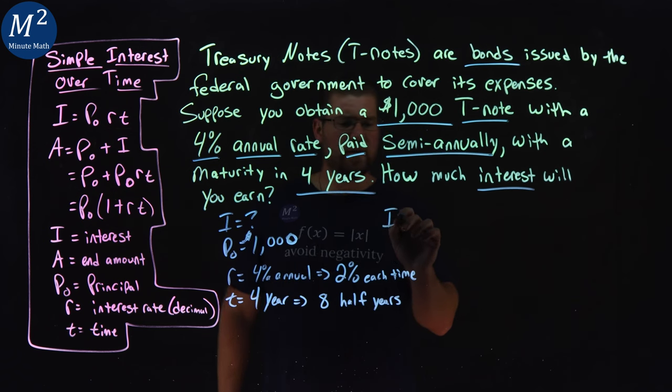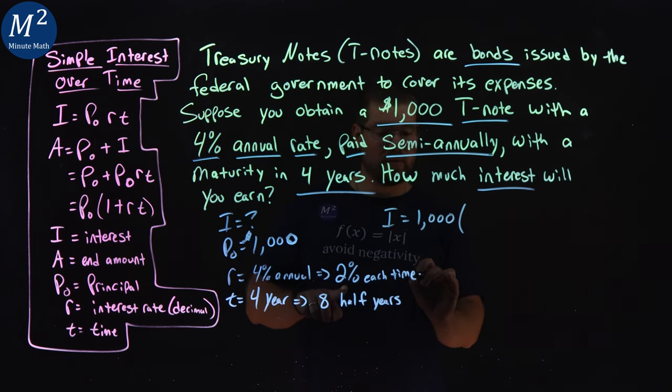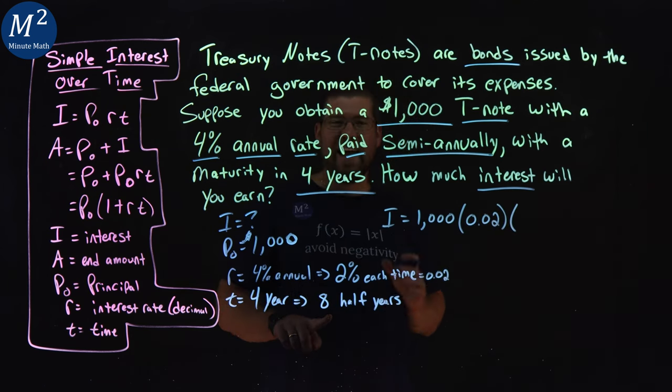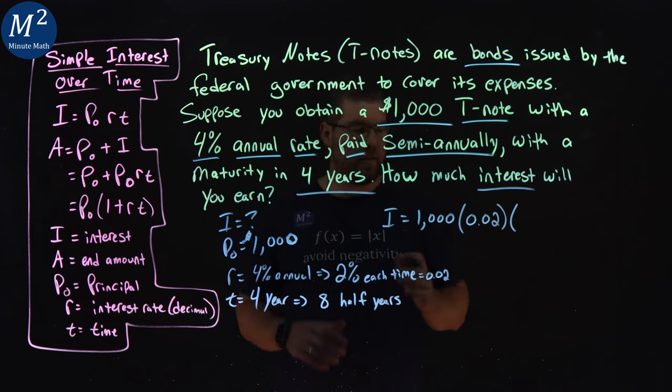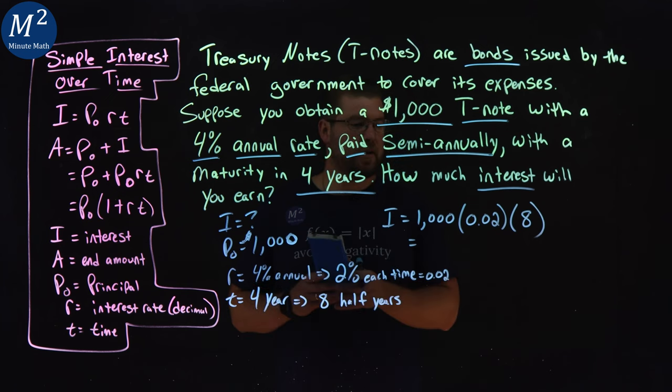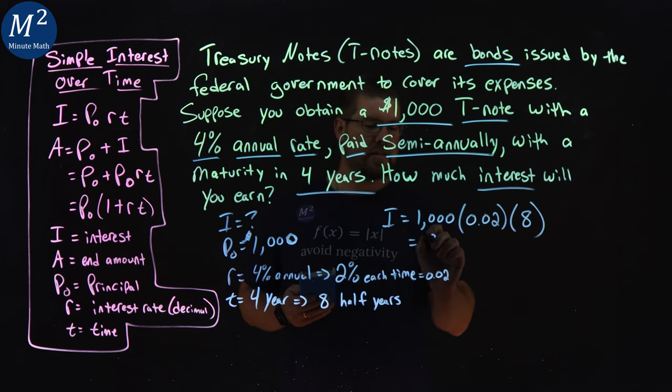So our interest formula here is our initial amount, 1,000, times our rate, which is 2% as a decimal, 0.02, times 8 time periods. If we multiply that out, I'll use my calculator here. 0.02 times 8 is 0.16 times 1,000 is $160.